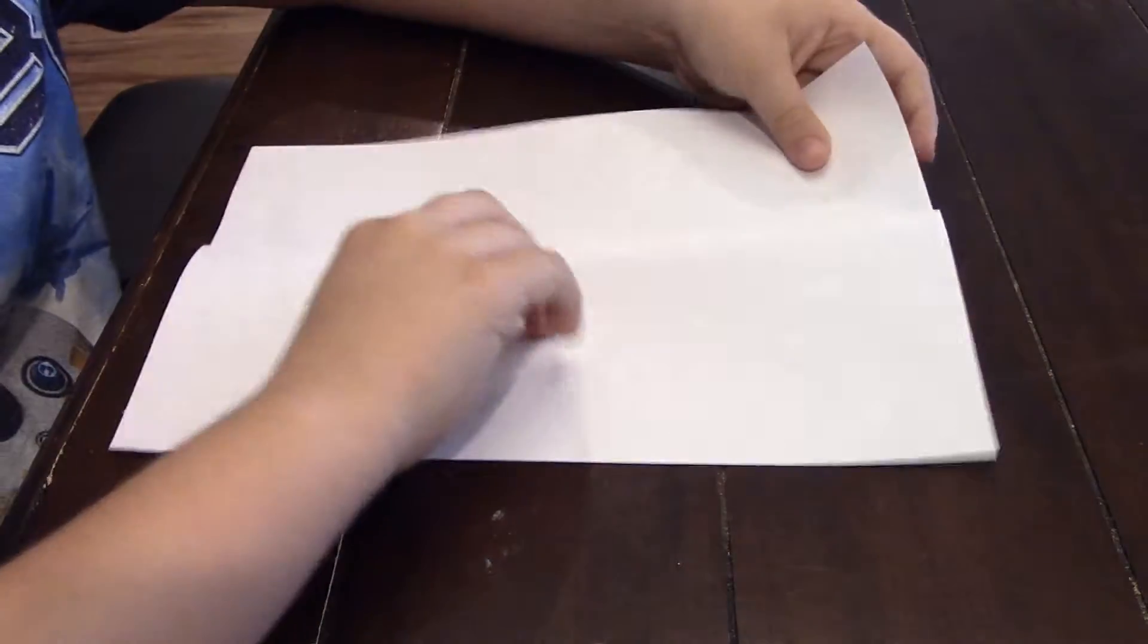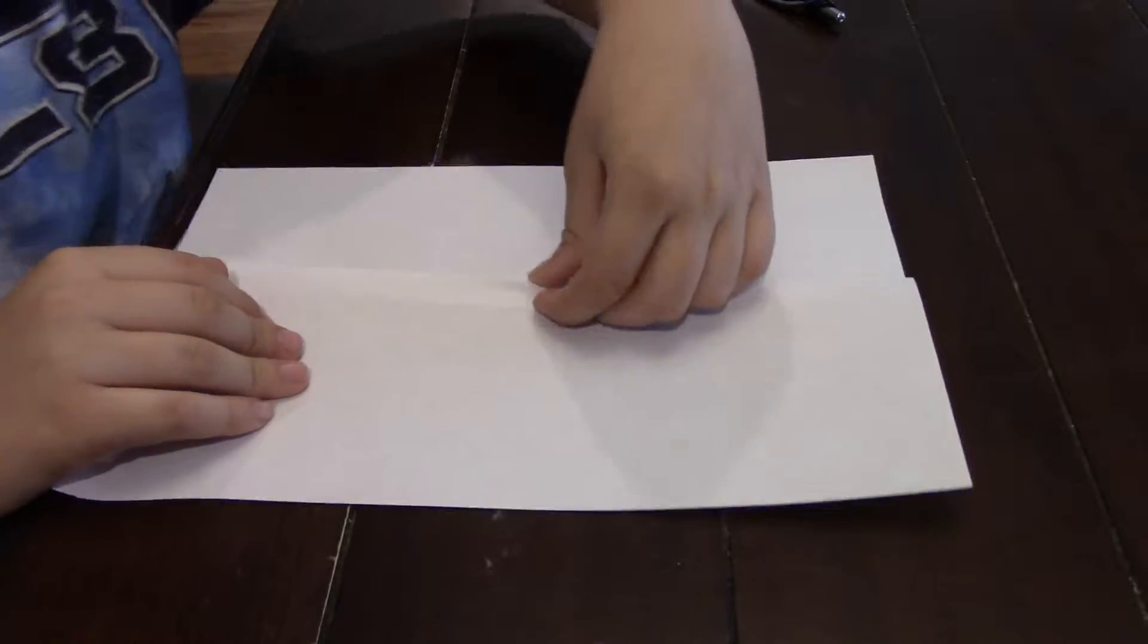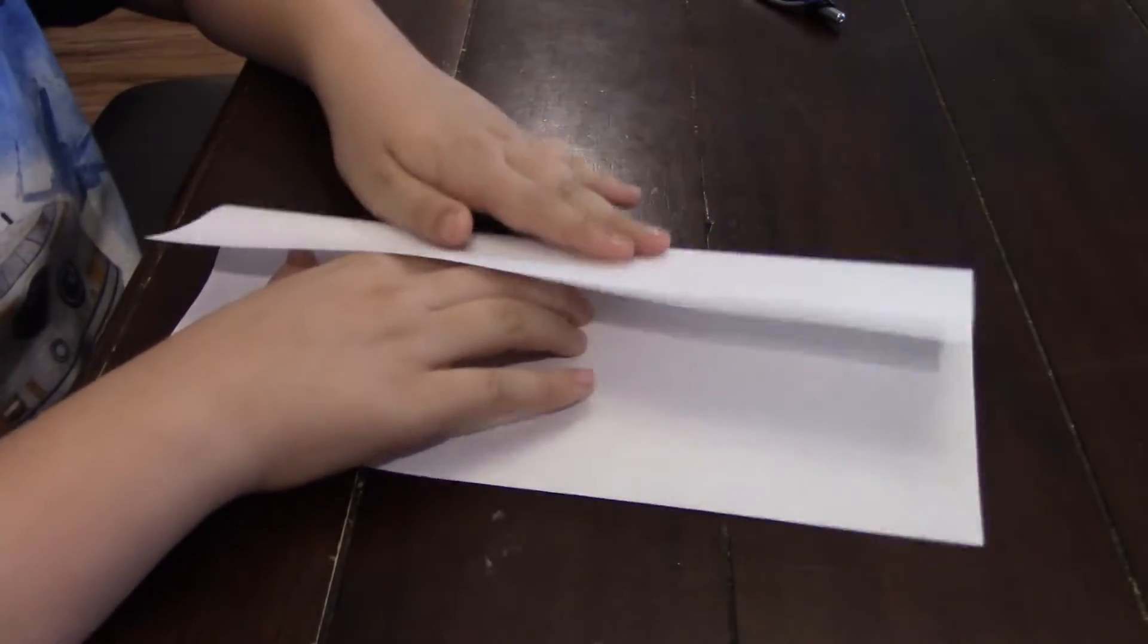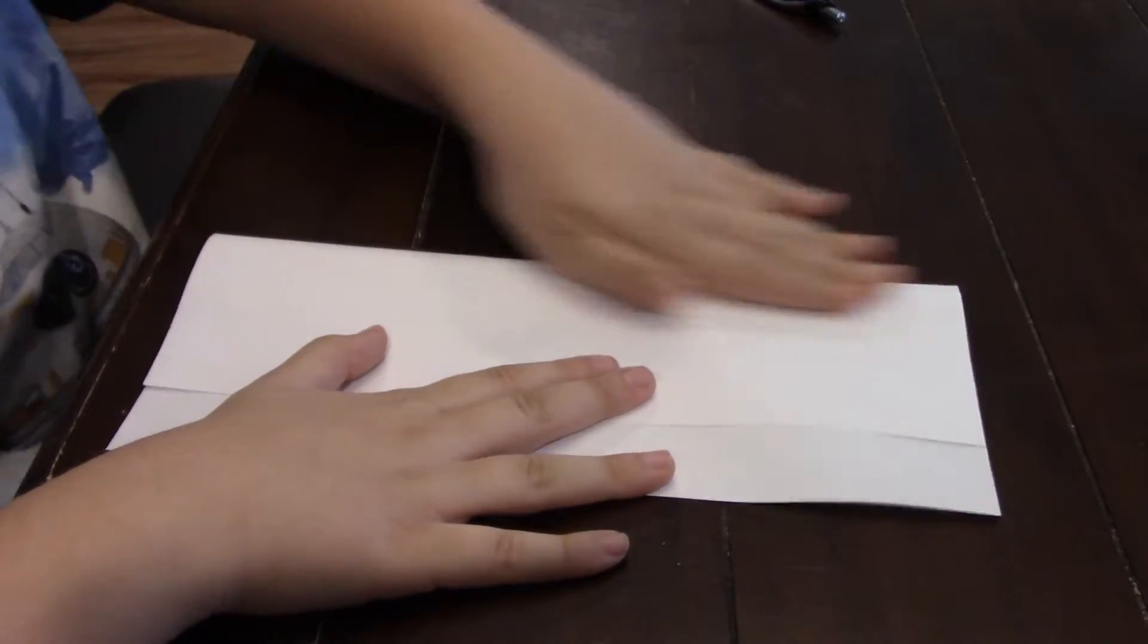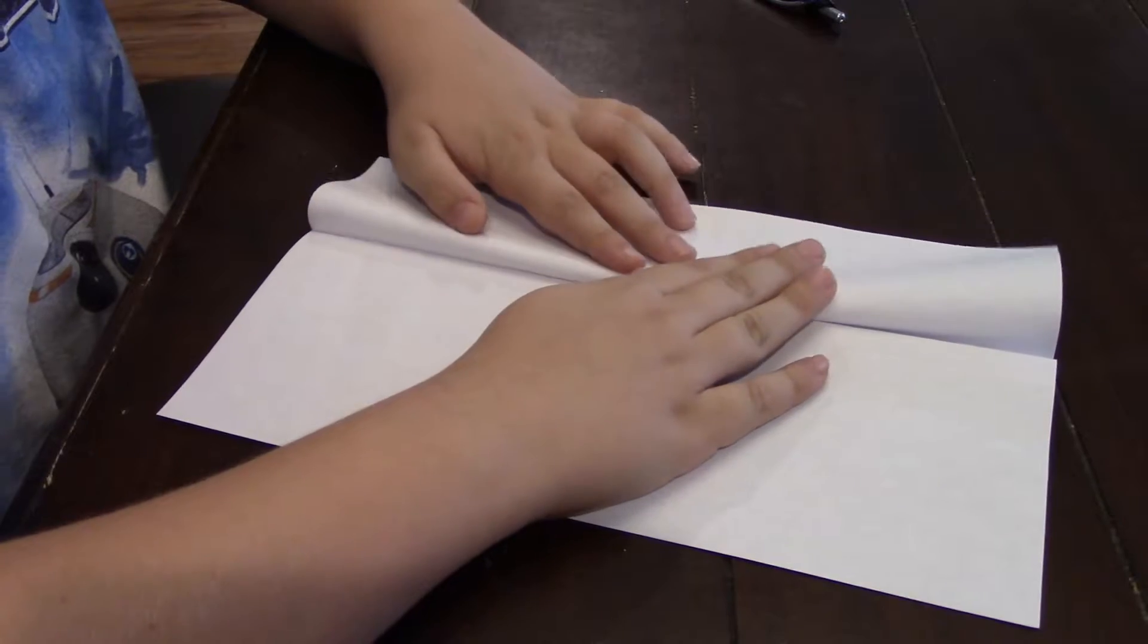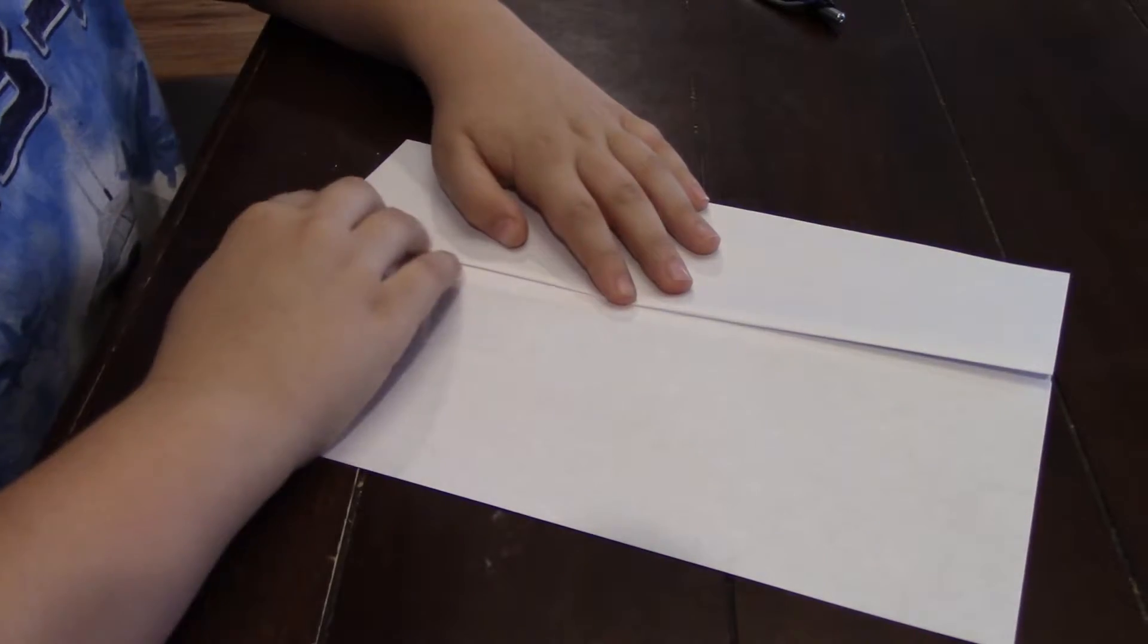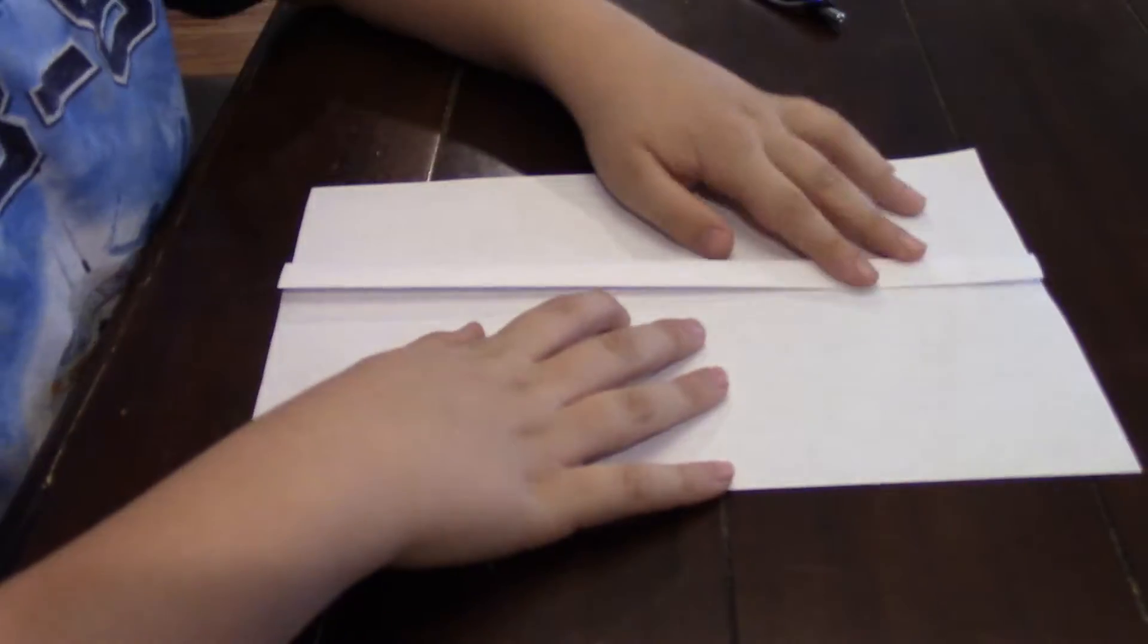So you're going to flip it over, and now you see what we got going is the bottom of Jabba's mouth right here. So now to make the top of his mouth, we're going to fold it down and then fold it up again right here. So he has a mouth. Now we're going to flip it over and all the work we're going to do now is on Jabba's backside.